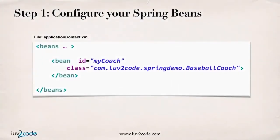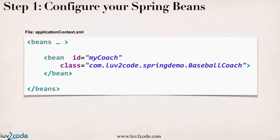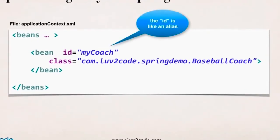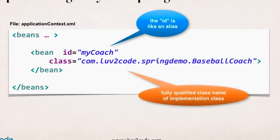Let's start with step one: configuring your Spring beans. In this example I'm going to use the XML configuration file. In the XML config file called applicationContext.xml, I have a bean. I give the bean an ID — 'myCoach' — and I give the class, which is the fully qualified name of the Java class. The ID is what your Java application will use when it wants to retrieve a bean from the Spring container. And class is the actual implementation you'll have for your application.